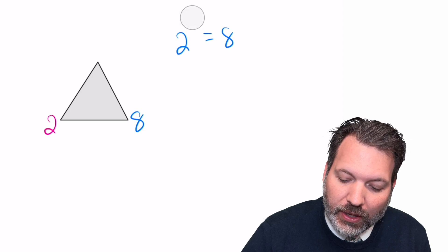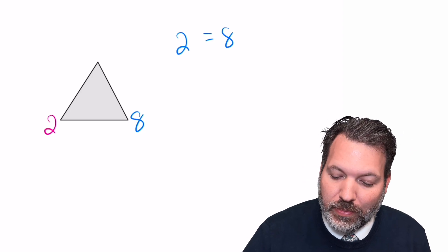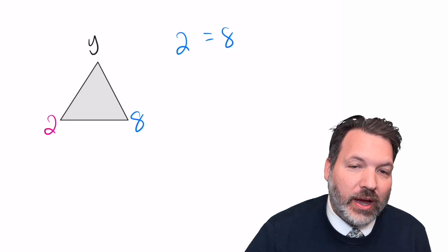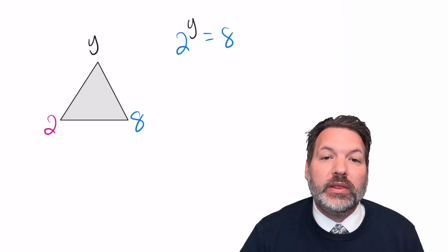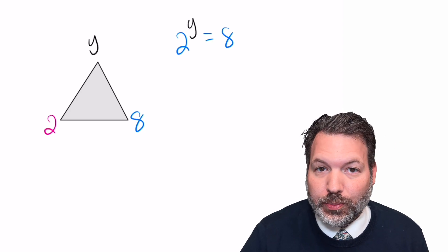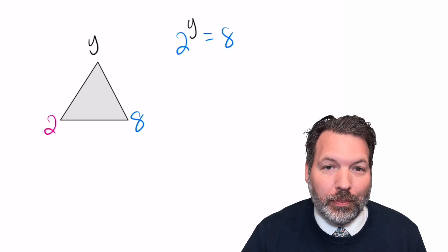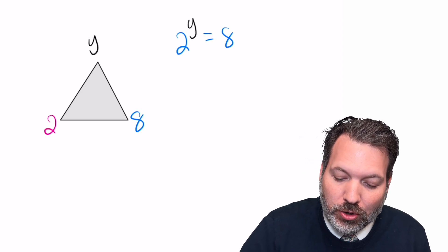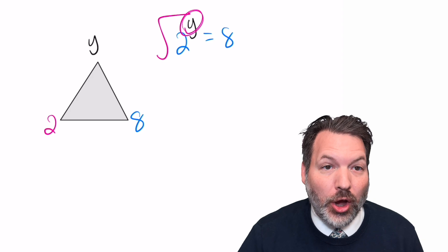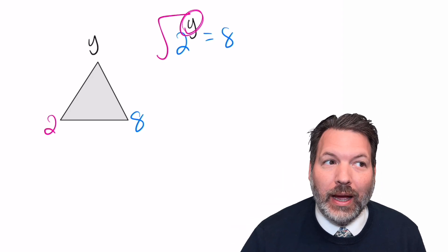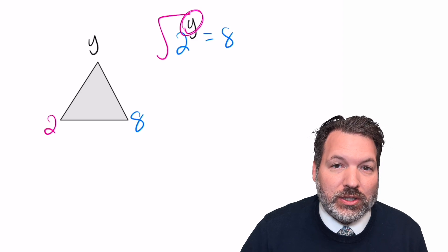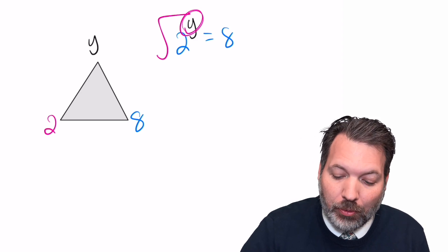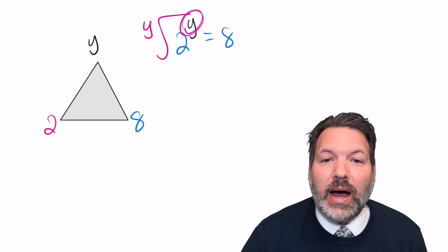But if, on the other hand, it was actually the power that I was missing, so I know that 2 raised to some y power is equal to 8, but I don't know what that power is, I don't know what my exponent is, a root doesn't help me. Because to take the cube root a moment ago, I needed to know the cube of the cube root. I needed to know that I was raising something to the third power. In this case, raising 2 to some y power doesn't help me, precisely because it's the y that I don't know.